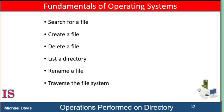The directory can be viewed as a symbol table that translates file names into their file control blocks. If we take such a view, we see that the directory itself can be organized in many ways. The organization must allow us to insert entries, to delete entries, to search for a named entry, and to list all the entries in the directory. When considering a directory structure, we need to keep in mind the operations that are performed on a directory.